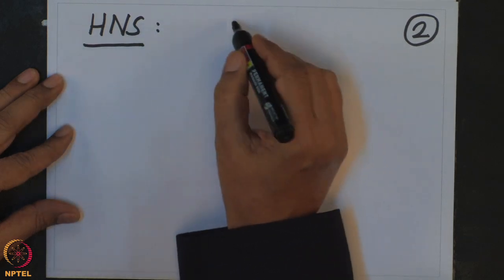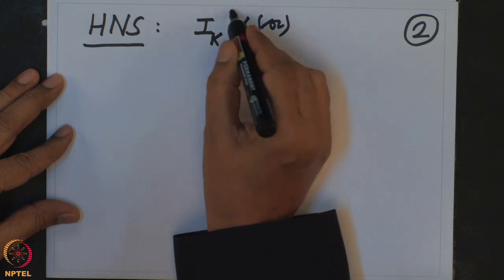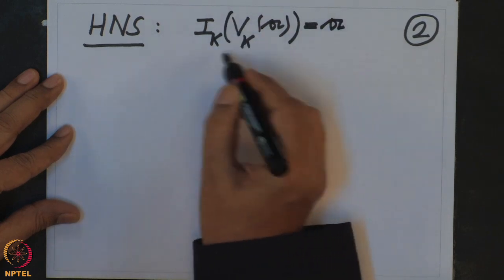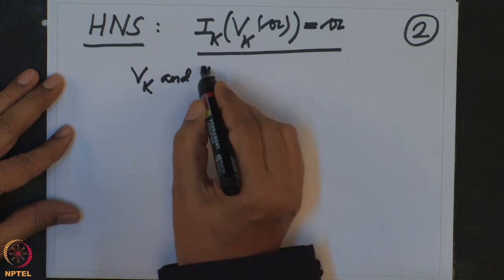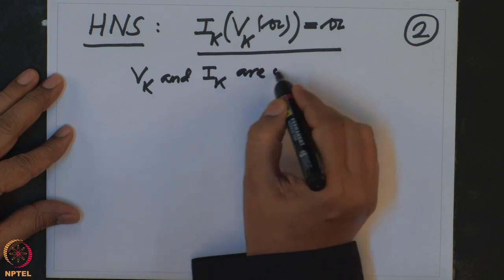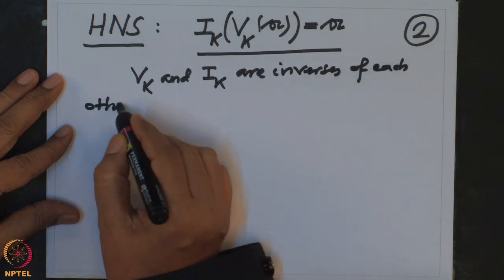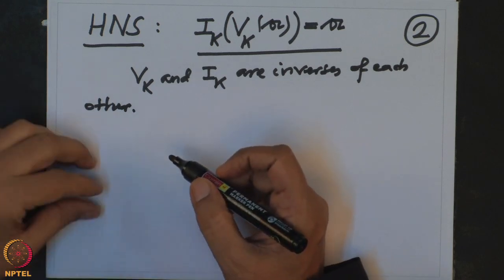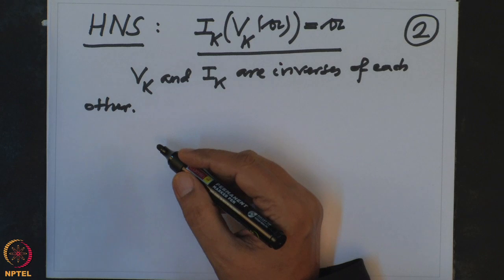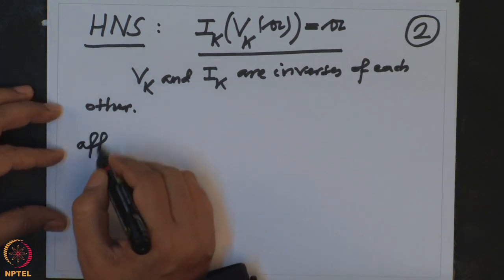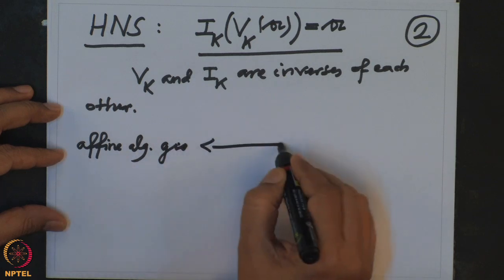Hilbert's Nullstellensatz says that if I take V_K of an ideal and then take the ideal of that closed set, I get back the radical of ideal A. This means the maps V_K and I_K are inverses of each other and are inclusion-reversing. So one can study algebraic sets by using ideals in the polynomial ring in N variables — that is called commutative algebra. Affine algebraic geometry is precisely this study; here are the geometric objects, and there are the algebraic objects.